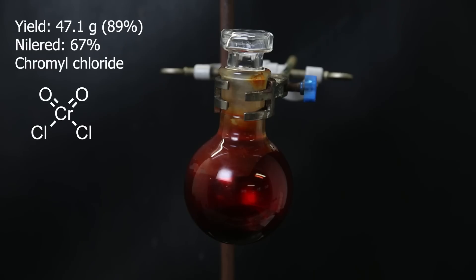The yield of the chromochloride turned out to be 47.1 grams, or 89%, which is higher than the yield NileRed got in his video. I assign the difference mostly to the improved mixing with the stir bar.